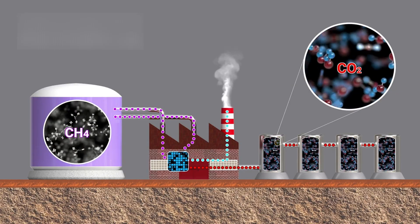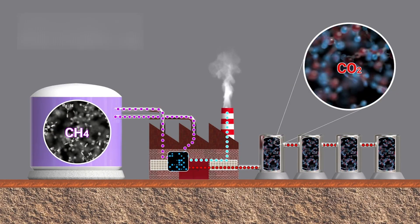On Earth, methane is produced largely by living organisms or by industrial processes.